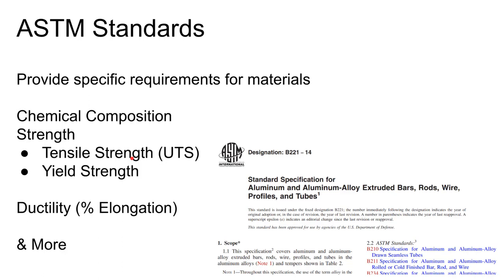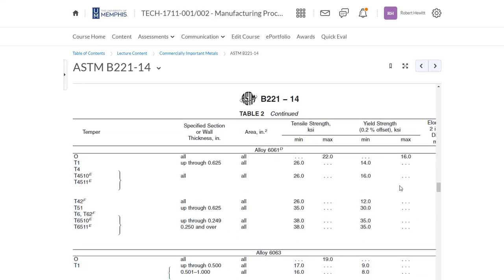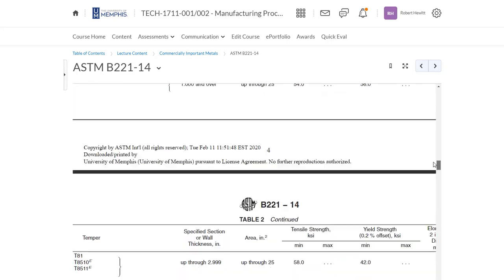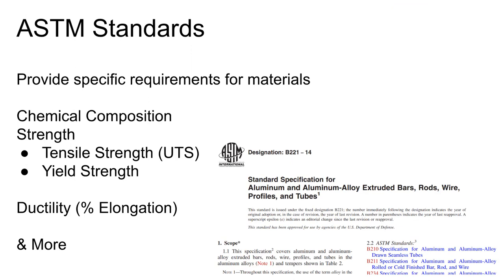An ASTM standard will tell you the minimum — and sometimes maximum — tensile strength, and also the chemical composition. For example, what will actually be present in aluminum 6061-T6511. I've uploaded an ASTM standard to eCourseWare — be familiar with it before the quiz because you'll need to be able to read and interpret it. If you're at the University of Memphis, you have access to the entire ASTM collection for full-text standards.